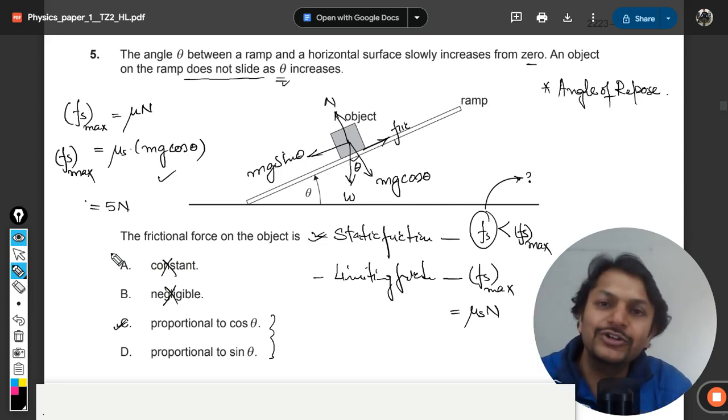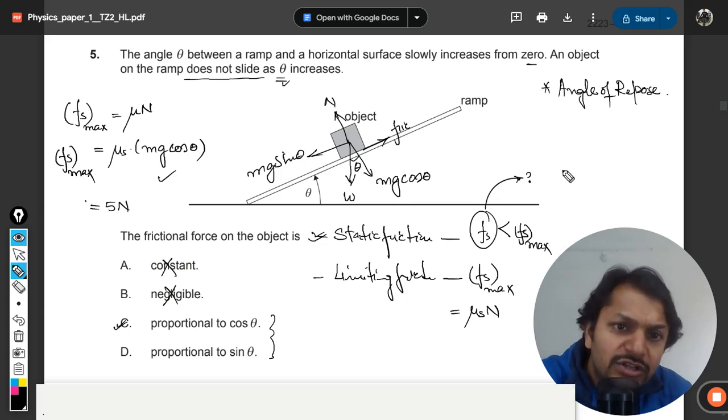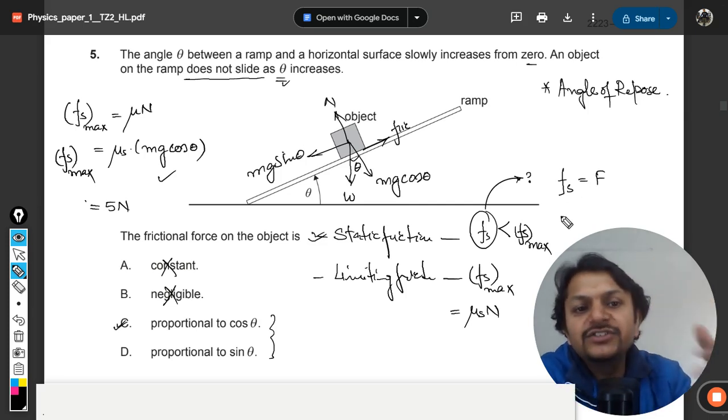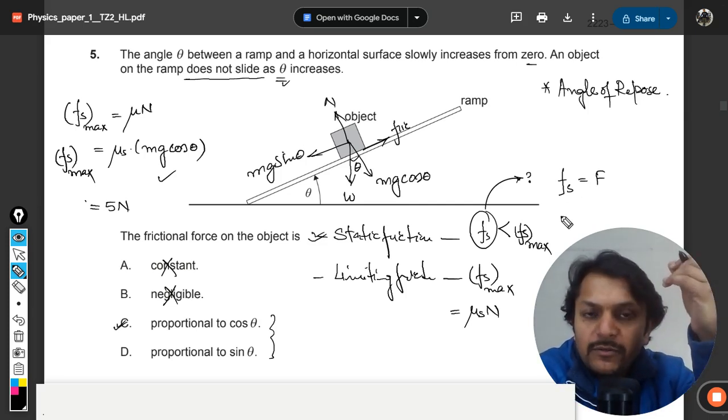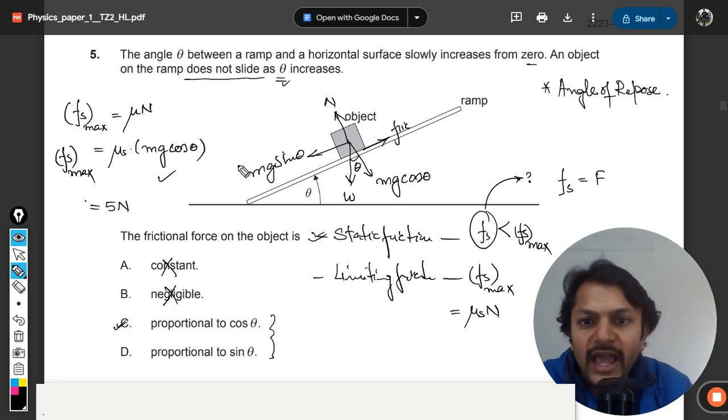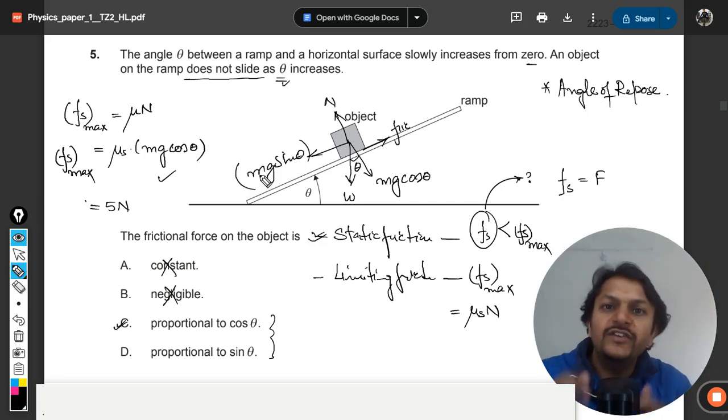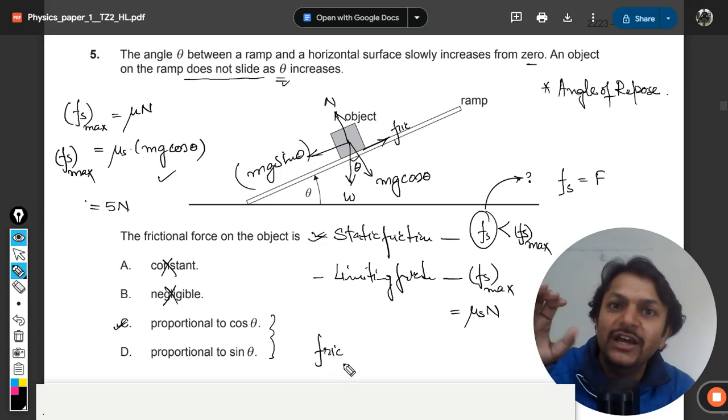So we have to create a formula for that. I have given all these things in my theory lectures in my online course by the way. But in this question we have to see, so this friction is found to be equal to the applied force which tries to move the body. Now in this case, mg sin theta is the force which is trying to move the body.